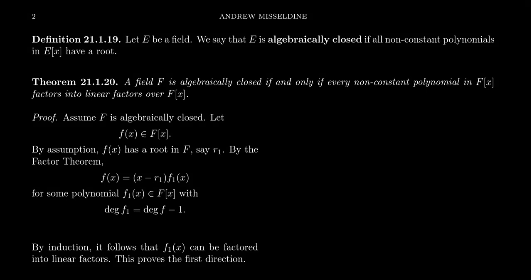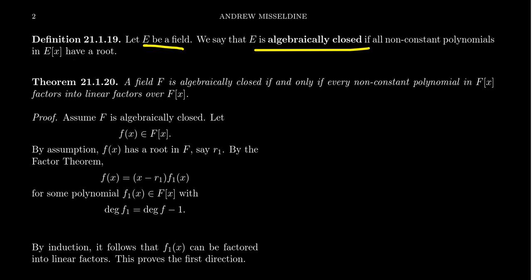We've previously defined the notion of an algebraic field extension; we're now ready to define what we mean by an algebraically closed field. Suppose E is a field. We say that E is algebraically closed if all non-constant polynomials in E have a root. Constant polynomials don't have any roots, so that's the obvious exception. But every other polynomial in E has a root.